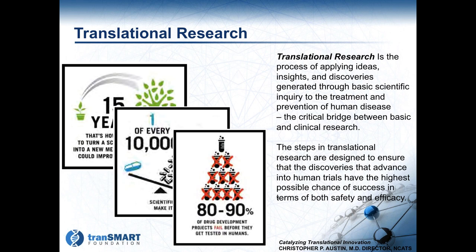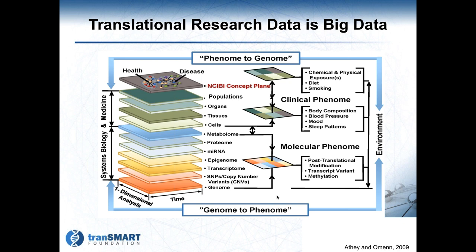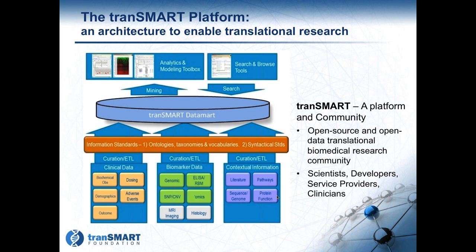A bit of background on translational research: the key focus is being able to apply what's happening in basic research back to what's being driven forward in terms of new therapy development, new diagnostic development, and new treatments for patients. The challenge is that it takes a very long time and is very error-prone — which is why we all need to work together. The data we're developing today is really big data, not just in terms of volume but also in velocity and complexity. When we look at the types of data needed for translational research, we're not just looking at clinical data — we're also looking at molecular data: metabolomics, proteomics, microRNAs, epigenomics, transcriptomics, and full genome variants.